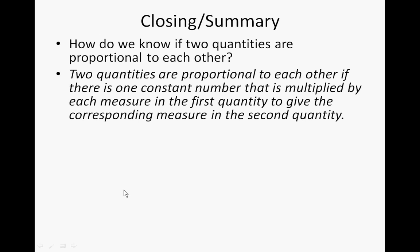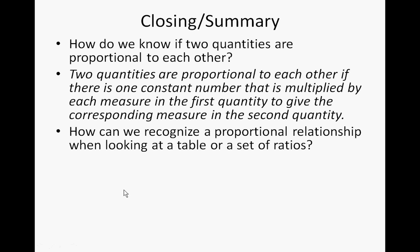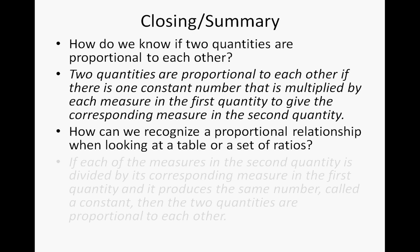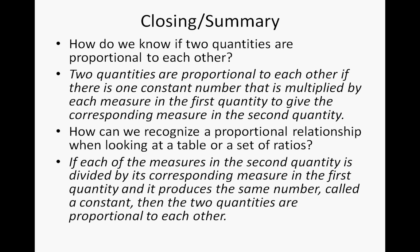Before we finish, we still have one more question: how can we recognize a proportional relationship when looking at a table or a set of ratios? If each of the measures in the second quantity is divided by its corresponding measure in the first quantity and it produces the same number — called the constant, or a unit rate or unit ratio — then the two quantities are proportional to each other. Now we have wrapped up our lesson, and we'll see you in class.